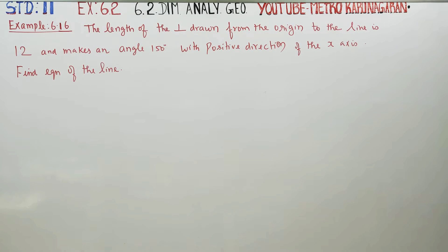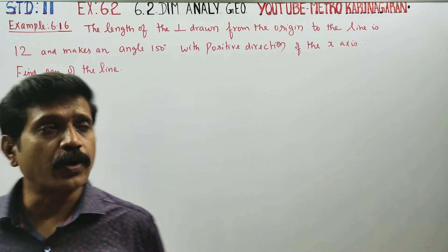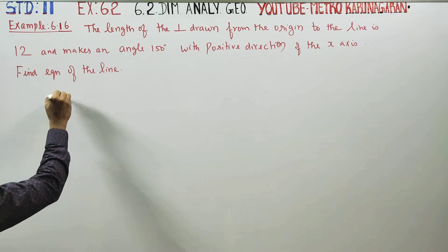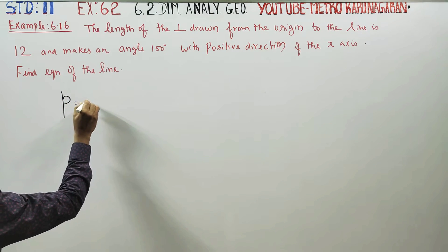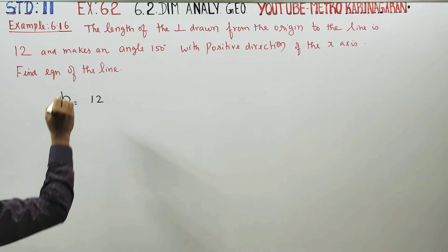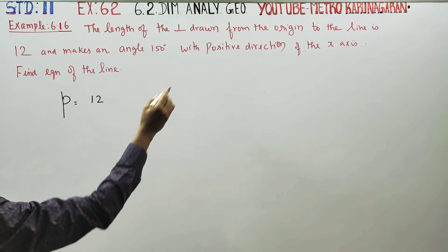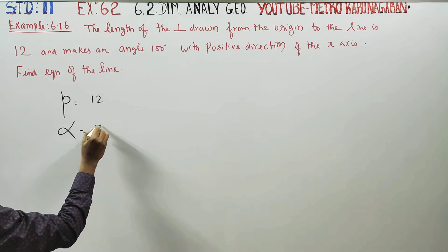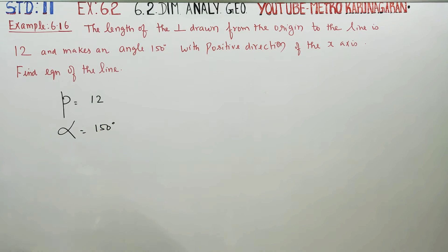Dear Learn Standard Students, in Example 6.16, the length of the perpendicular drawn from the origin to the line is 12. Length of the perpendicular, if we say small letter p, it is 12. And it makes an angle 150 degrees with the positive direction of x-axis. That is why we say alpha, it is 150 degrees.